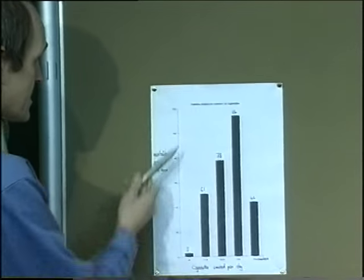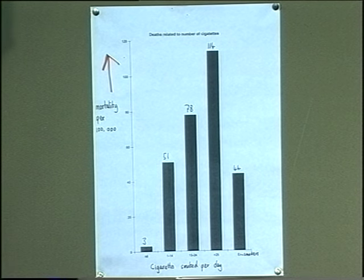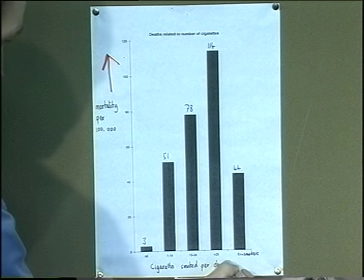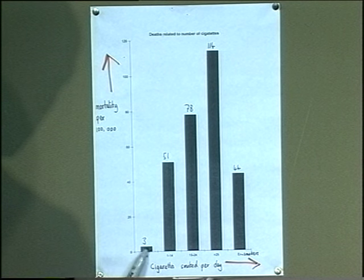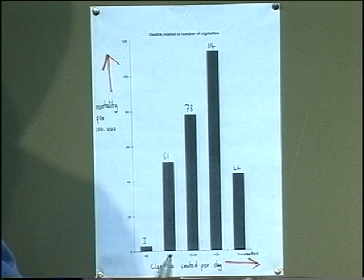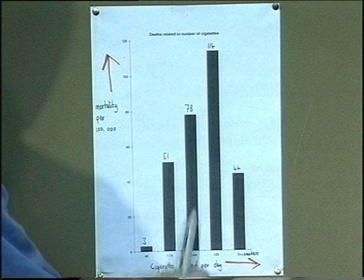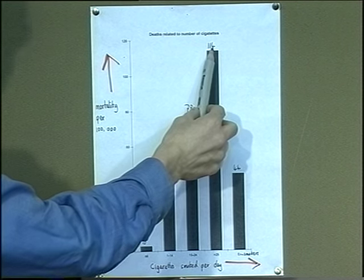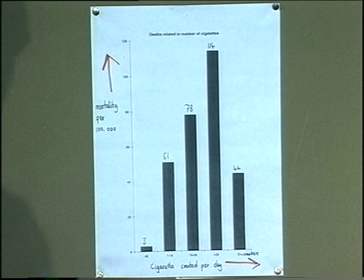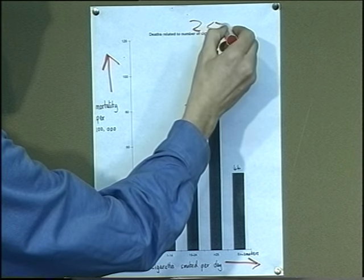This graph illustrates the correlation between number of cigarettes smoked and deaths from chronic obstructive airways disease. The vertical axis is mortality per 100,000; the horizontal axis is number of cigarettes smoked per day. People that don't smoke: 3 per 100,000 die per year from COAD. Those that smoke 1 to 14 cigarettes a day: mortality goes up to 51. Those that smoke 15 to 24: mortality goes up to 78 per 100,000. And those that smoke more than 25 cigarettes a day: mortality shoots up to 114.